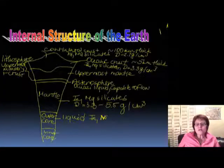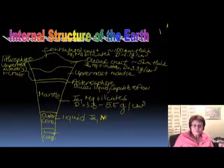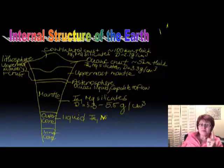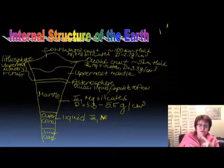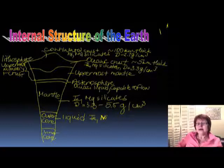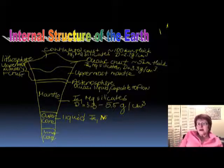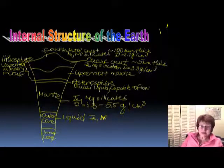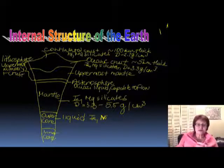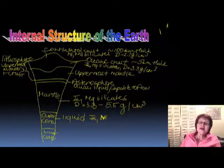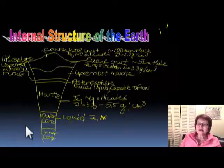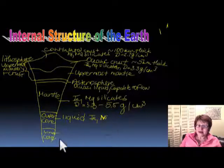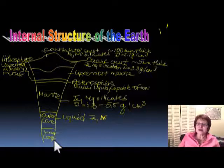The next slide is one of the most important things you will have to know. When we meet in class, make me draw a better drawing than this one. I will ask you on the test to draw and label this — that means you have to do everything just like shown here. The inner core is solid, it's iron and nickel (Fe-Ni), and the density is 11 grams per cubic centimeter.